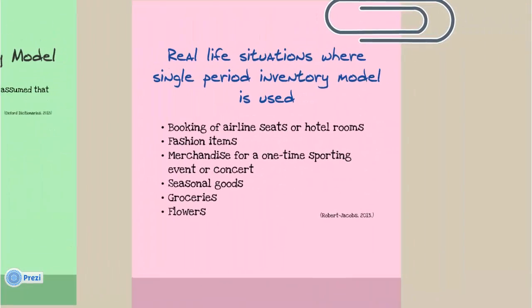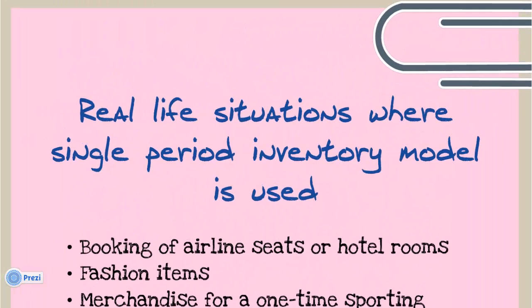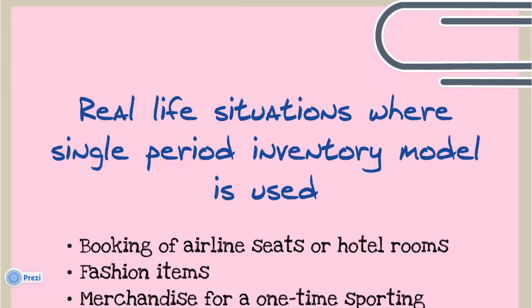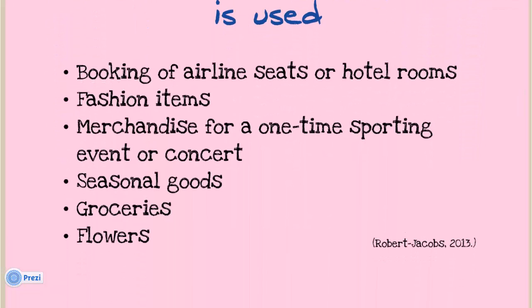Apart from newspapers there are many other situations where the single period inventory model is used. As a rule of thumb the products being sold are perishable, meaning they will not keep for long periods of time and have a very short shelf life. For example: the booking of airline seats or hotel rooms, fashion items that can only be ordered once from a fashion house at the start of the season, merchandise for a one-time sporting event or concert, seasonal goods such as Christmas cards that are not worth anything in the new year, groceries and flowers.